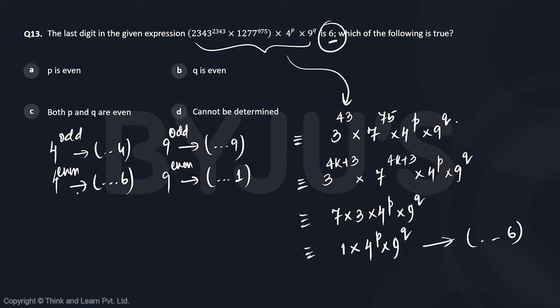If I want a 6 by the product of 4 to the power something and 9 to the power something: 4 times 9 is 36, that will result in 6. 6 times 1 is 6, which will result in 6. 4 times 1 and 6 times 9 will not result in 6.